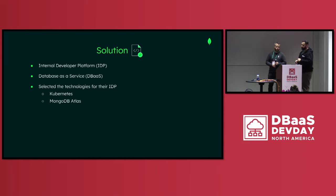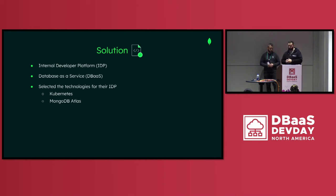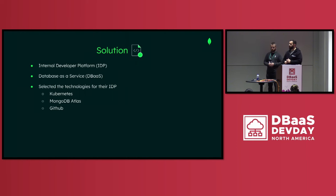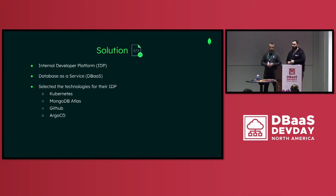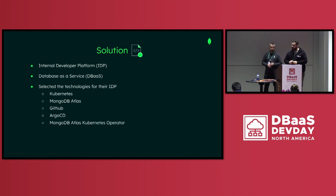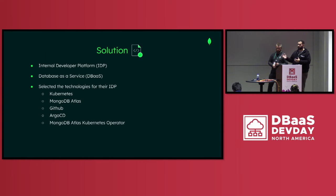MongoDB Atlas was their choice for the database as a service. They considered different vendors and ended up with Atlas because it's already a managed service offering — they didn't want to manage their databases on Kubernetes, although they wanted to manage it through Kubernetes. GitHub was the choice for storing infrastructure as code. Argo CD was their selected choice to automate the deployment of infrastructure configuration files from their Git repository to Kubernetes. And finally, they decided to use the Kubernetes Atlas operator, which helped them manage their Atlas resources in a Kubernetes-native way.